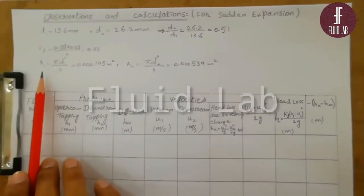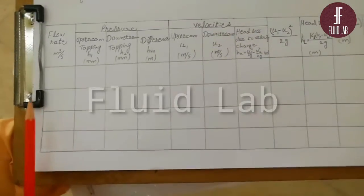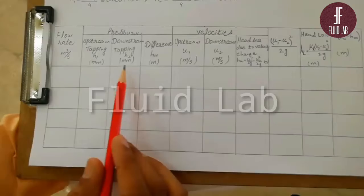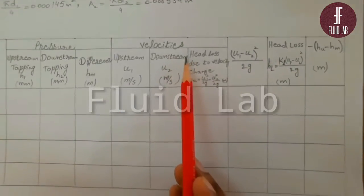From diameter D1, we have calculated area A1 and area A2. The first column of our table is flow rate as usual, and upstream reading, downstream reading, and difference of both.